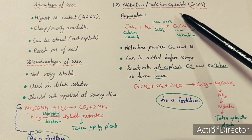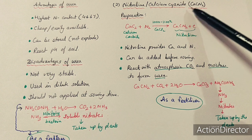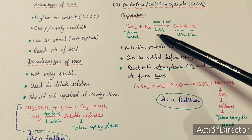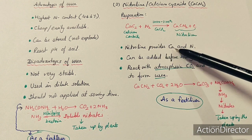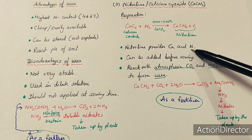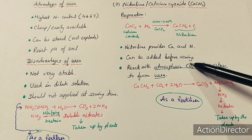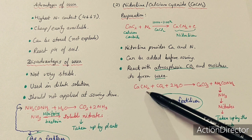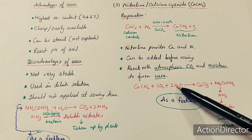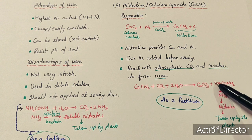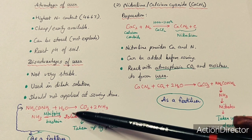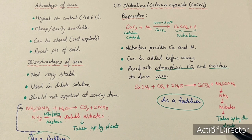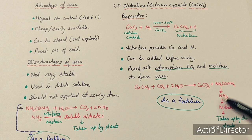The second amide fertilizer is nitro lime (calcium cyanamide, CaCN₂). CaCN₂ is prepared by reacting calcium carbide (CaC₂) with N₂ at 1000–1100°C in the presence of calcium chloride. Nitro lime provides calcium (secondary nutrient) and nitrogen (primary nutrient) and can be added to the soil before sowing. When CaCN₂ reacts with atmospheric CO₂ and water, it forms calcium carbonate and urea. This urea then reacts with water to form ammonia, nitrifying bacteria convert ammonia to soluble nitrates, and plants absorb these nitrates.